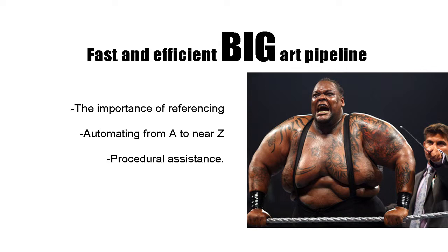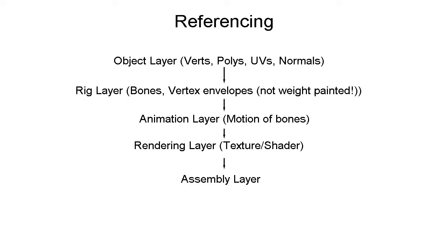The basic idea for an art pipeline is you want to have an object layer, which is all your various points. You have a rig layer, which is all the rigging. You want to have your animation layer separate, your rendering layer separate, and you want to have an assembly layer — for example Unity or whatever else it might be.